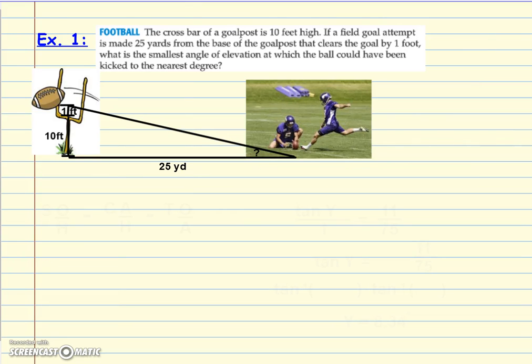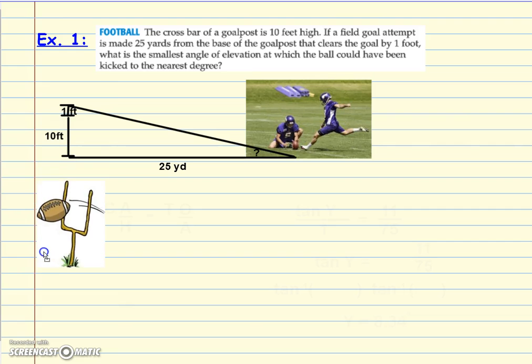Let's start with example one. The crossbar of a goal post is 10 feet high. If a field goal attempt is made 25 yards from the base of the goal post and it needs to clear by one foot, what is the smallest angle of elevation at which the ball could have been kicked to the nearest degree? So we've got a kicker who's got to kick the ball through the uprights.